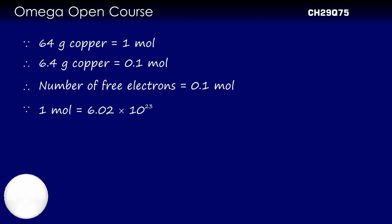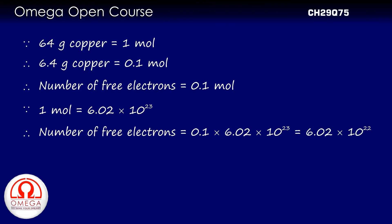But 1 mol is 6.02 × 10²³. Thus, the total number of free electrons in 6.4 g copper wire is 0.1 × 6.02 × 10²³, or 6.02 × 10²². This is our answer.